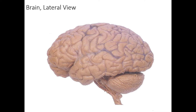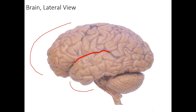We can actually see some pia mater and the vasculature still on the surface, but that's not going to deter us. Here, first off, we have the lateral sulcus that we've already identified, and that separates the frontal cortex from the temporal cortex below it. Of course we also see the pons, medulla, and brainstem and spinal cord — portions of the brainstem — and the cerebellum below that.